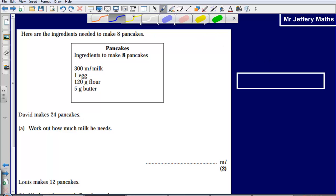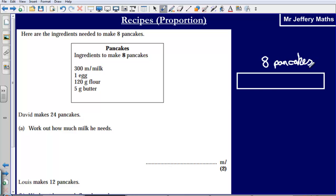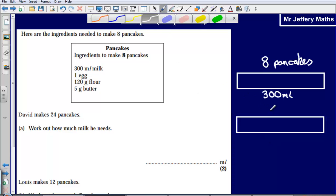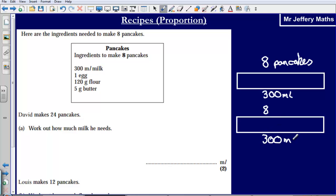Now this bar is going to represent my 8 pancakes. So this here is my 8 pancakes. And for my 8 pancakes, how much milk do I need? Well I need 300 milliliters of milk. Now I need to make 24 pancakes. So what I could do is take this 8 pancakes and add it on again. So if I was to take that again, that would give me another 8 pancakes and that would give me another 300 milliliters of milk.